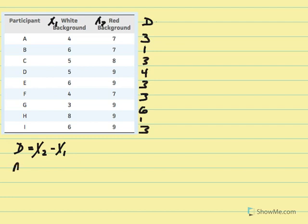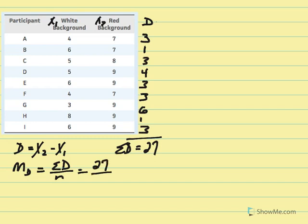We're going to calculate our mean difference — the average of the differences — which is the sum of D over n. Taking the sum of our D column, we get 27. So the average difference is 27 over 9, giving us a mean difference equal to 3. On average, the female is rated 3 points more attractive on the red background than on the white.